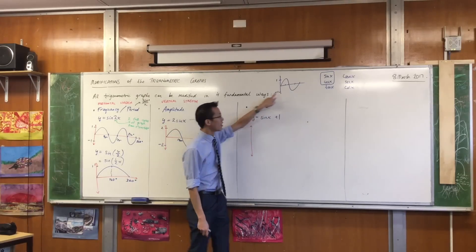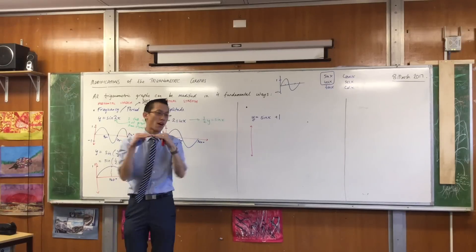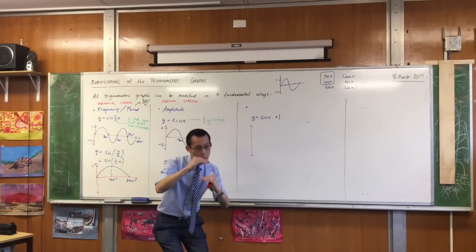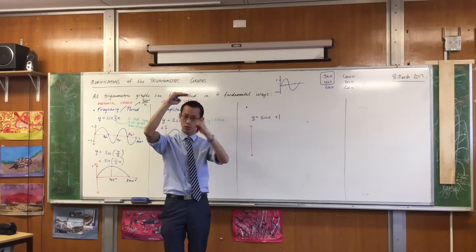So the lowest the graph can go now is not negative one, it's zero. And the highest I can go is not one anymore, it's two. So instead of going from negative one to one, I've moved the whole thing upwards between zero and two.